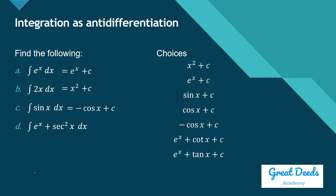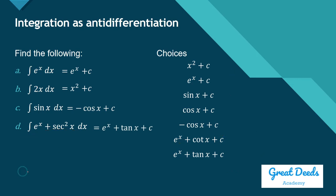What is the integral of e to the x plus the square of secant of x dx? Which function has a derivative equal to this? The derivative of e to the x is e to the x, and the function that gives secant squared of x as its derivative is tangent of x. So the answer is e to the x plus tangent of x plus C, because the derivative of e to the x plus tangent of x plus C equals e to the x plus secant squared of x.